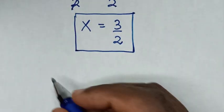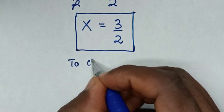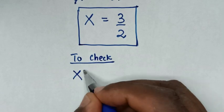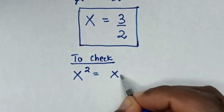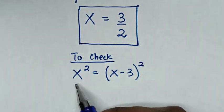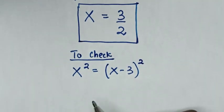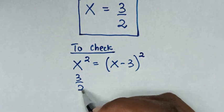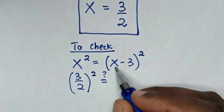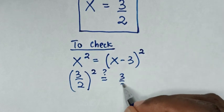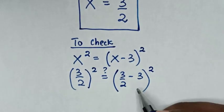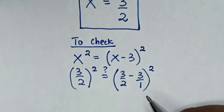Now to check if this value of x is correct: from our original problem, x squared is equal to x minus 3 bracket squared. We substitute the value of x into both sides. So it will be 3 over 2, bracket squared, is it equal to 3 over 2 minus 3, bracket squared. Note that 3 is the same as 3 over 1.